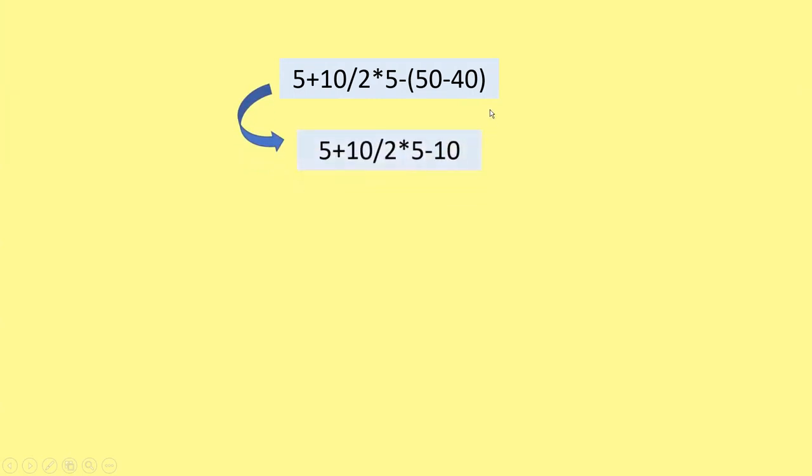Let's look at an example: 5 plus 10 divided by 2 times 5 minus (50 minus 40). We have 5 operators and must decide the order. Since parentheses have first priority, we compute 50 minus 40 first, which gives 10. The equation becomes: 5 plus 10 divided by 2 times 5 minus 10. We've already resolved the parentheses.